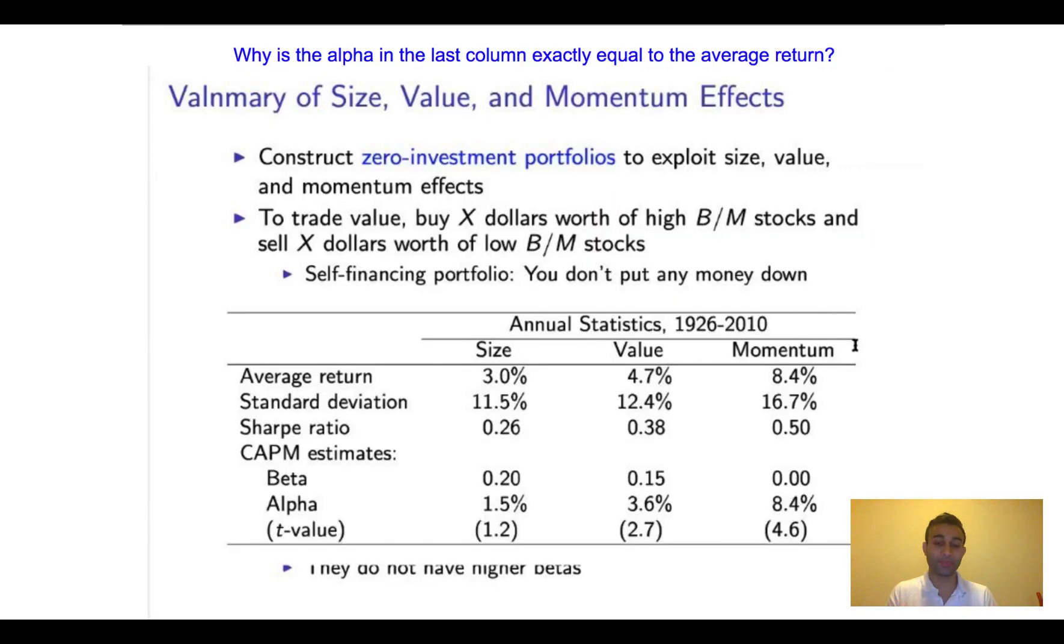Now, here's a second example. Again, this is a flashcard that I'm using in my investing class, but notice the question here is, what is the alpha in the last column, and why is it exactly equal to the average return? So in the last column, you'll see that the average return is 8.4%, and you'll see that the alpha is also 8.4%. So the question I ask myself through this flashcard is, why are those two equal? Again, this is a math-like problem, but notice how it's conceptually asked. I'm asking, why are those two numbers the same?